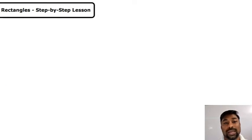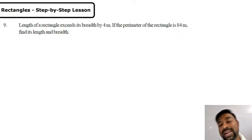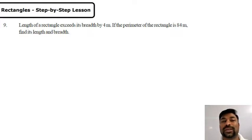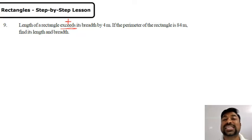Welcome back to the application part. In the explanation part I showed how simple linear equations apply to rectangles. Now I am choosing one more problem. See the question on screen: length of a rectangle exceeds its breadth by 4 meters. If the perimeter of the rectangle is 84 meters, find its length and breadth. The keyword here is 'exceeds' — exceeds means plus.